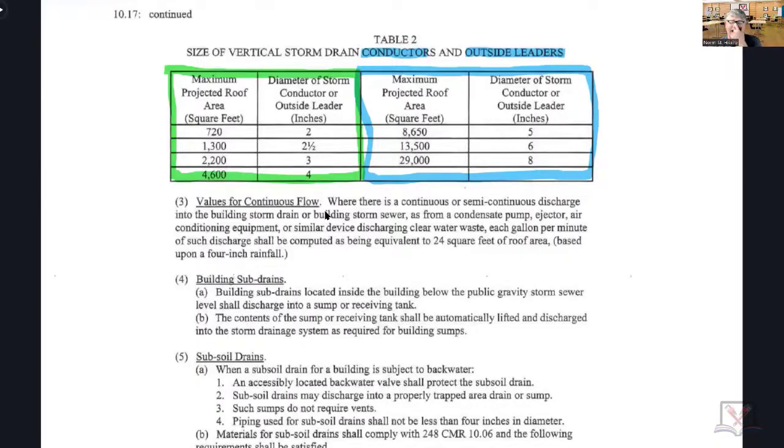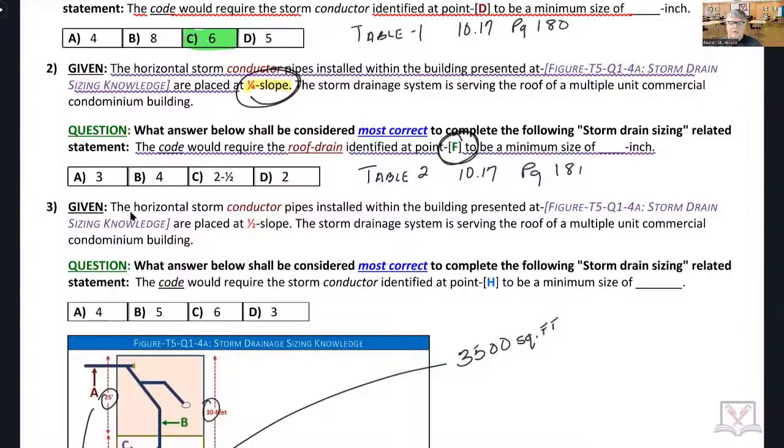1750. What size is the roof drain at F? Three inch. How many of you would agree that it's three inch? Very good. It is indeed three inch.